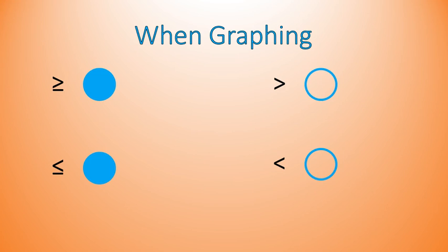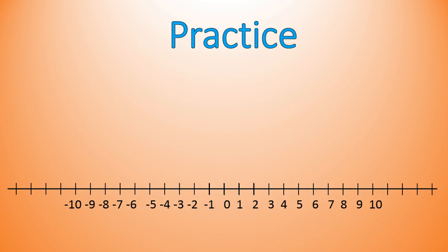Let's do a little bit of practice. Show me what x is greater than or equal to 7 would look like. You're going to have a closed dot — because it's greater than or equal to, the point 7 is part of the solution — and then highlight everything greater than 7 with an arrow going to the right.